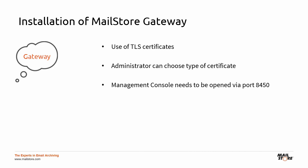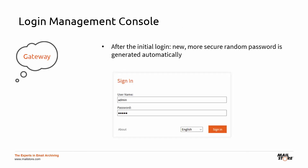Once you have completed both fields, click on Apply and run the service. In order to log into the MailStore Gateway management console, you will need to open it via port 8450 in a browser. In the password field, enter the corresponding password of the admin user. On initial login, the password is "admin." After the initial login, a new, more secure random password is generated automatically by the system.